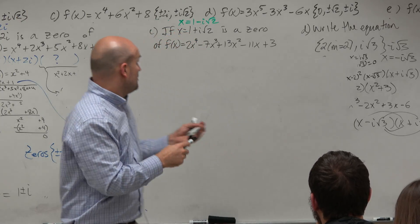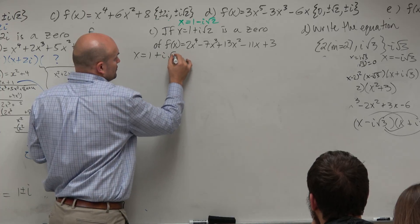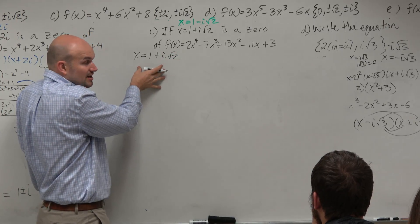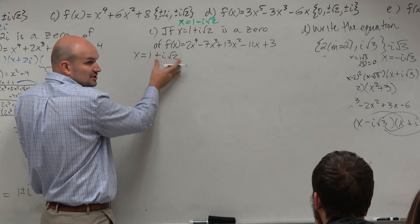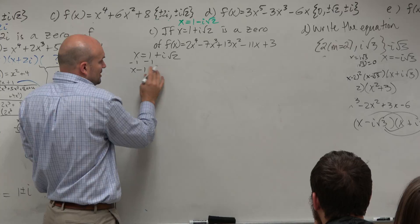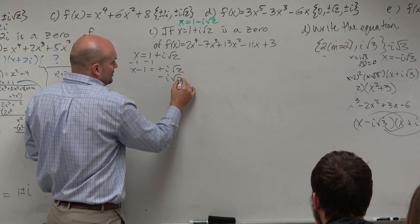And if we know that one of these is a zero, x equals 1 plus i square root of 2, then we know we can write this as a factor. To write it as a factor, just basically set it equal to zero. This is what I've showed in another one, but because I feel like showing all my steps, I'm going to show all the steps.